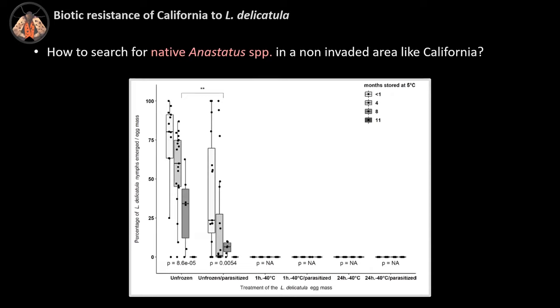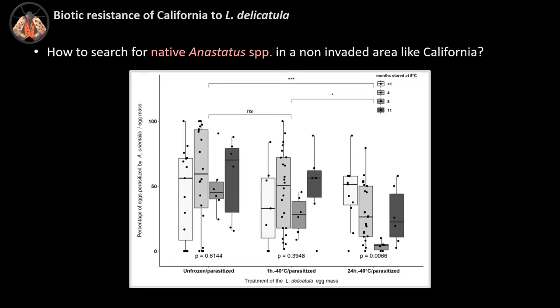After freezing the egg masses, parts were offered to Anastatus orientalis. In this figure, on the left is the percentage of nymphs emerged on unfrozen, non-exposed egg masses — our control. The second group shows unfrozen egg masses exposed to the parasitoids. No nymphs emerged from any of the freezing treatments — one hour or 24 hours — whether parasitized or not. These are good news, and we can use sentinel eggs in non-invaded areas.